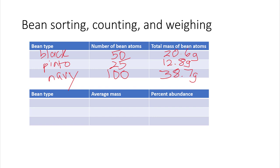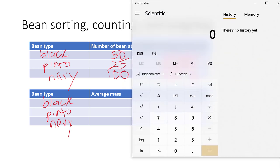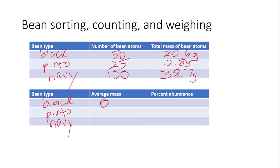And now in our data table, you had to do some calculations. So I'm going to write the bean types again: black, pinto, and navy. And then you calculate the average mass of each bean. So you take the mass and divide by the number of bean atoms for each type of atom. So I have my handy-dandy computer calculator here. And so I do 20.6 divided by 50, and I get 0.412.